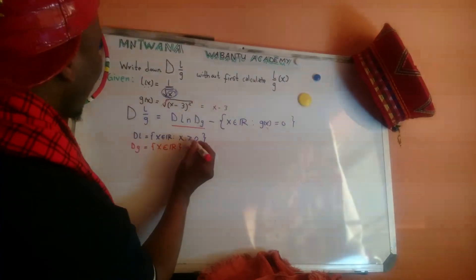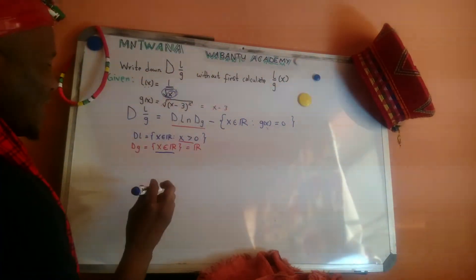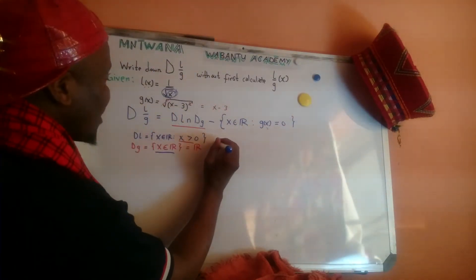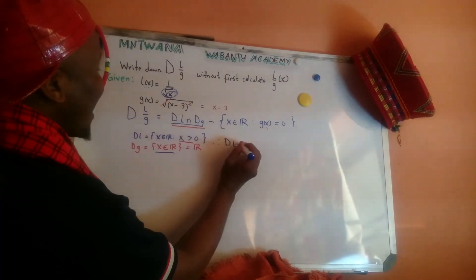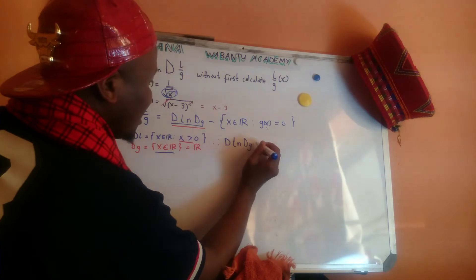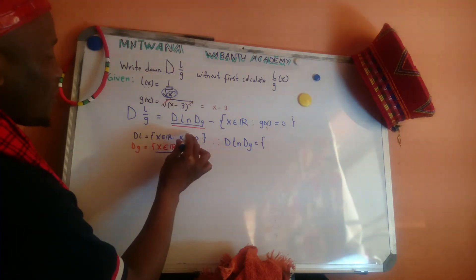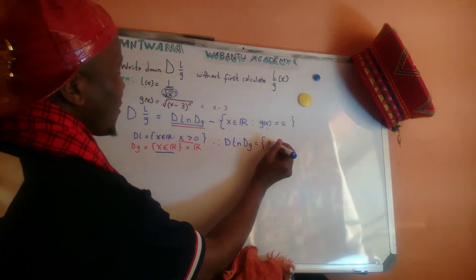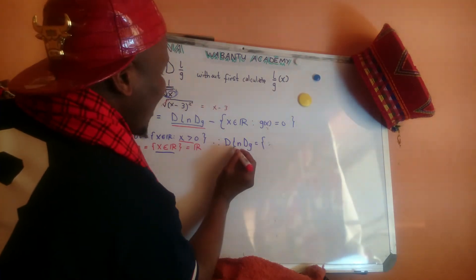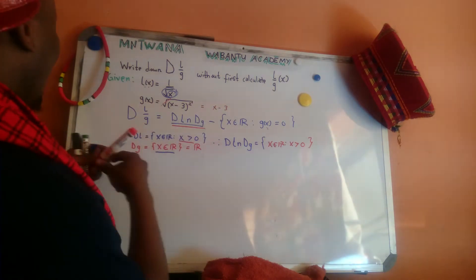Now we intersect the two domains. We have x > 0 for domain of l, and x is everything for domain of g. Where do they intersect? Since one is everything and the other is x > 0, their intersection is x > 0. So domain of l intersected with domain of g equals x ∈ ℝ whereby x > 0.